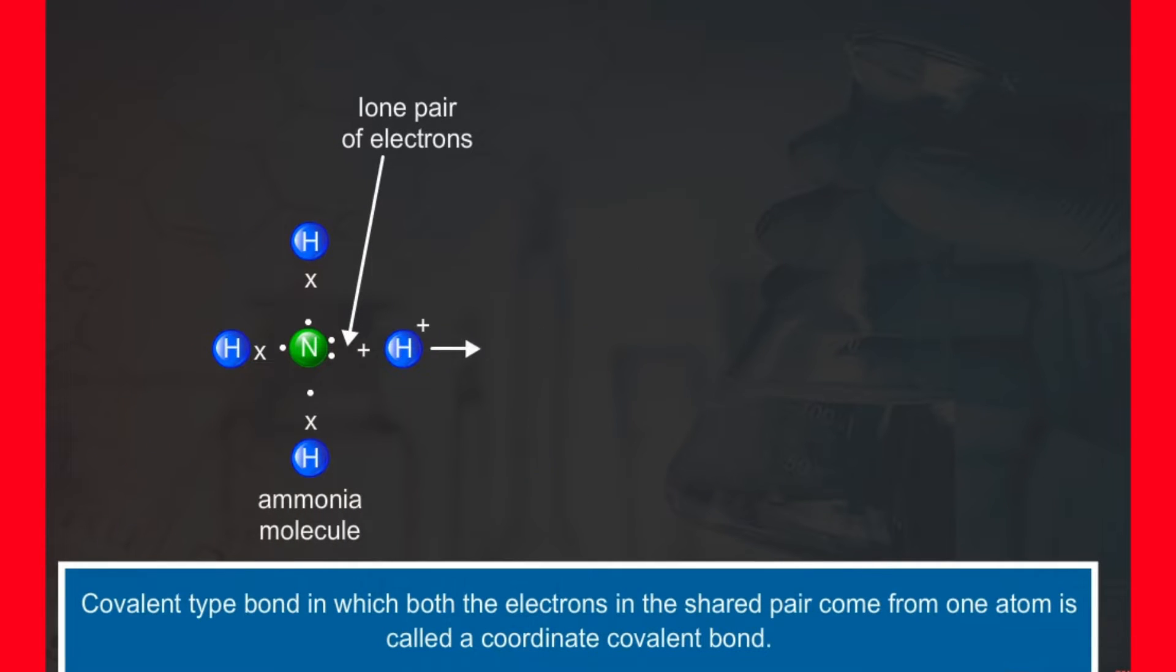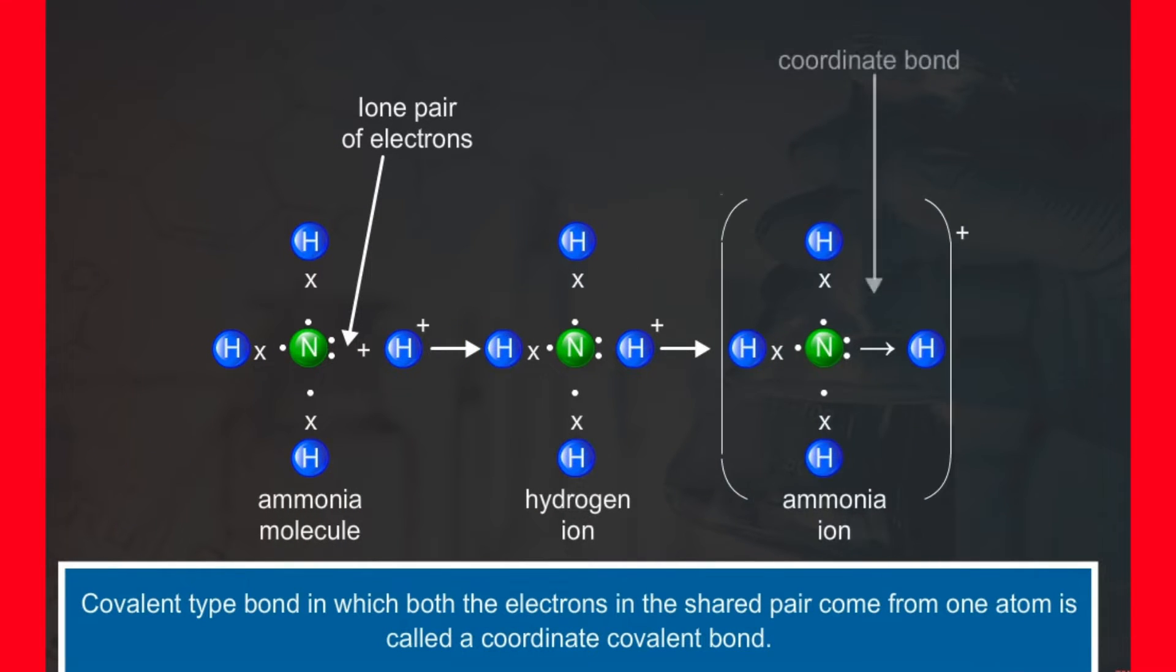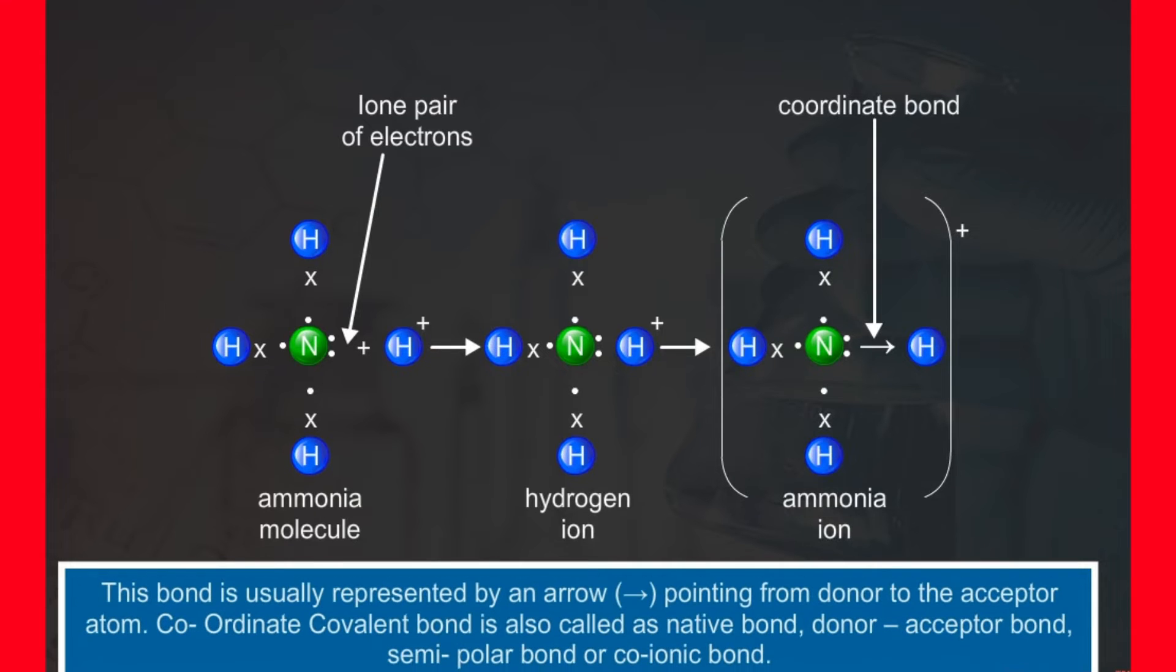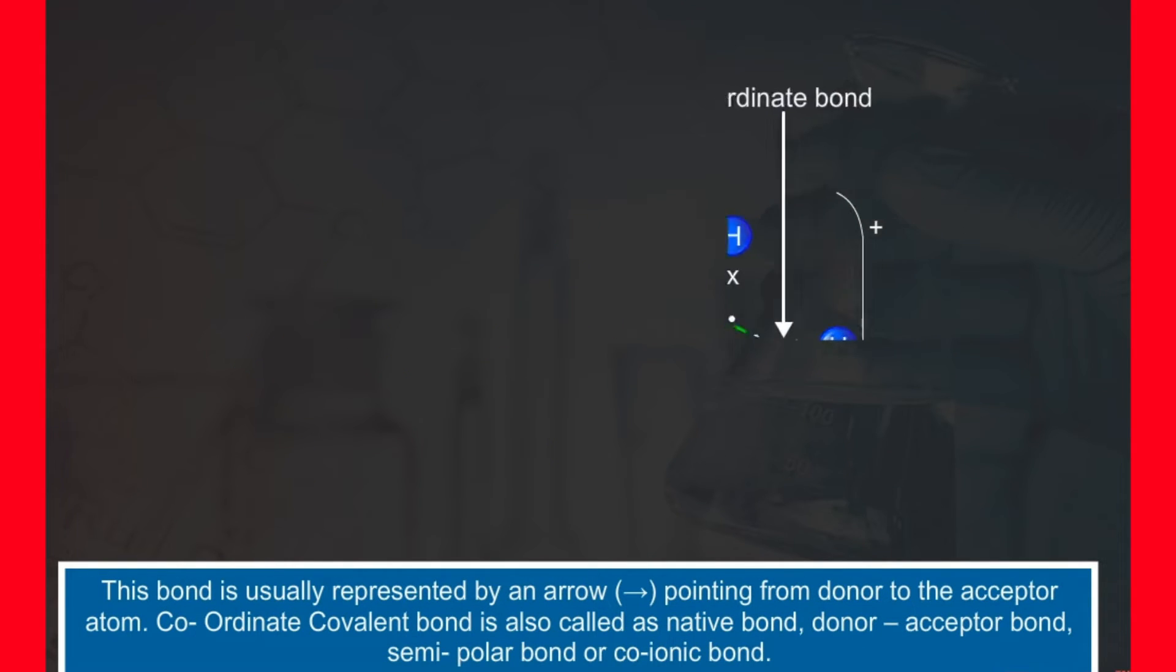Coordinate covalent bond: Covalent type bond in which both the electrons in the shared pair come from one atom is called a coordinate covalent bond. This bond is usually represented by an arrow pointing from donor to the acceptor atom. Coordinate covalent bond is also called as dative bond, donor acceptor bond, semi-polar bond or co-ionic bond.